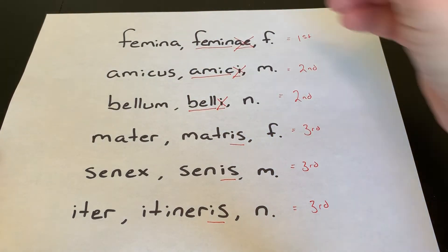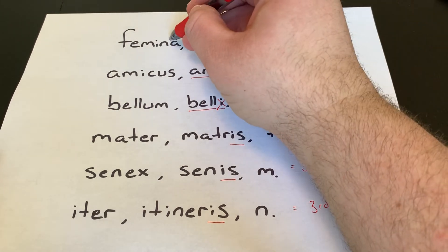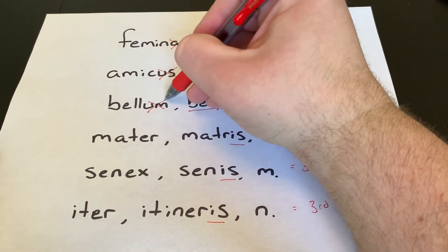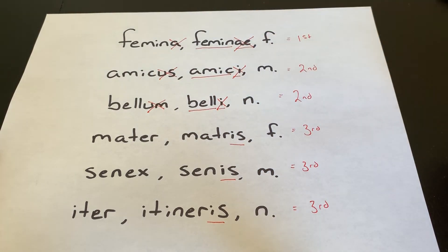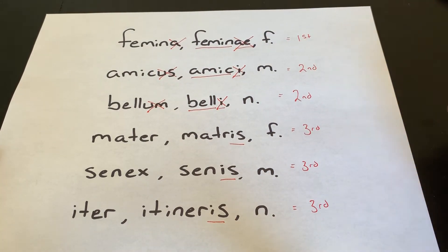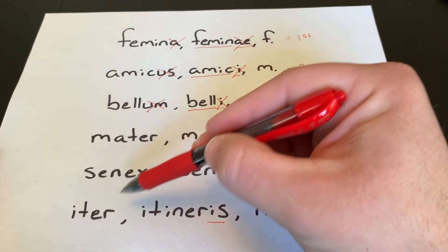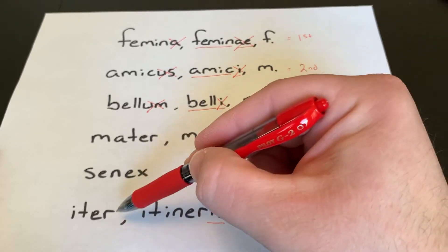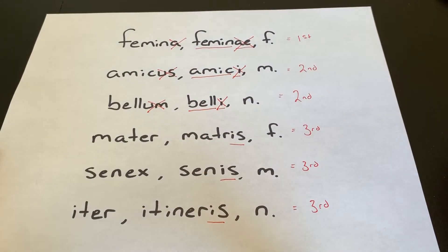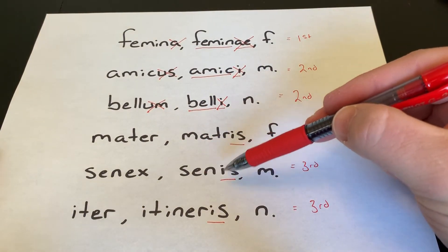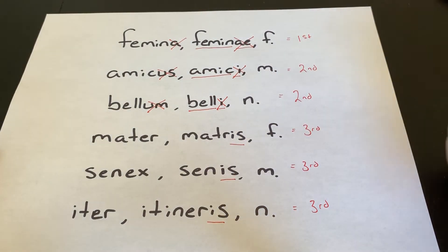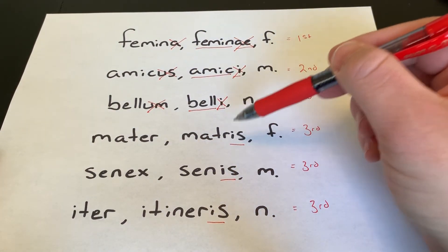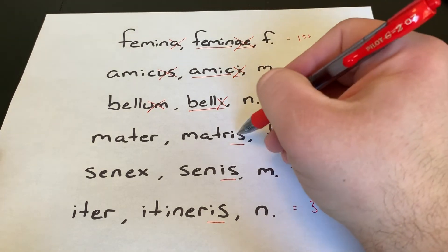Now some people think you can just take off the nominative. And for some words that does work. Notice that there's no difference here. But when you look at words that are especially words in the third declension, you can't just take off the nominative ending. Another reason is that the stem can change from nominative to genitive and the genitive is where you're going to find the consistent stem.